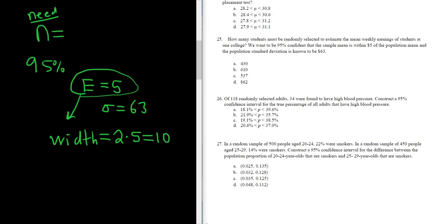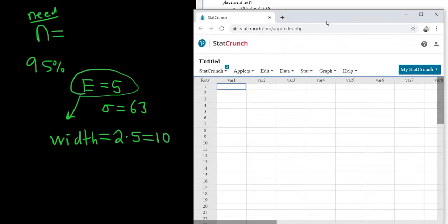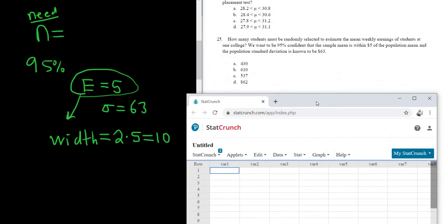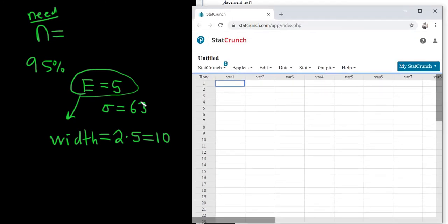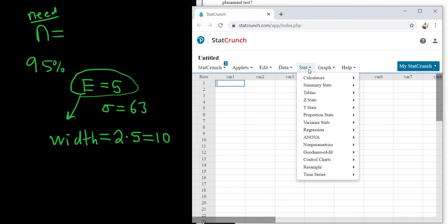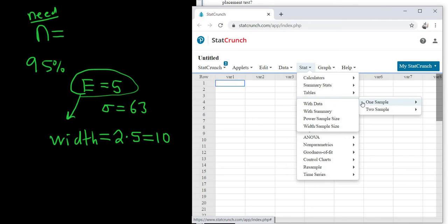And so now we're ready to go to StatCrunch. Because we're looking for a sample size for a mean, and we're given the population standard deviation, we're going to use Z. So we go to Stat, Z, 1 sample, and then we have width, sample size.